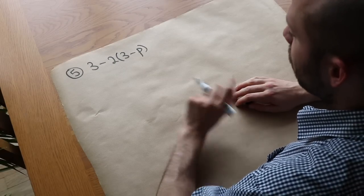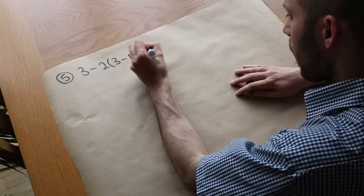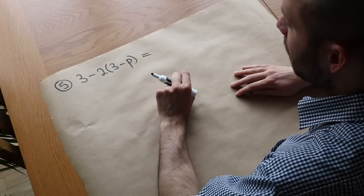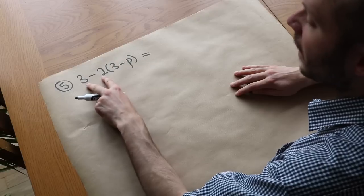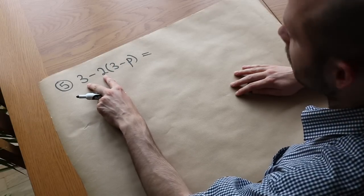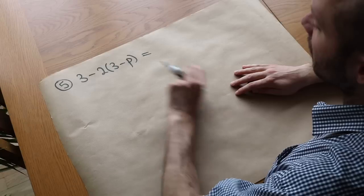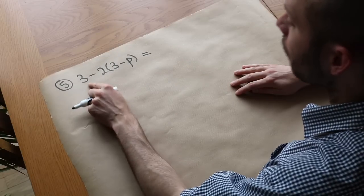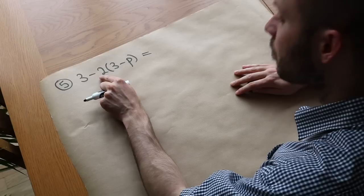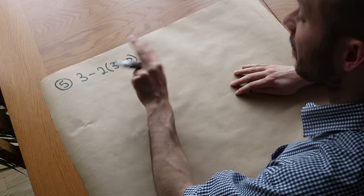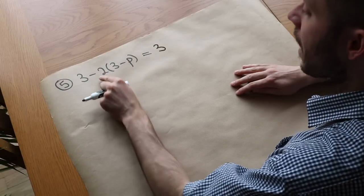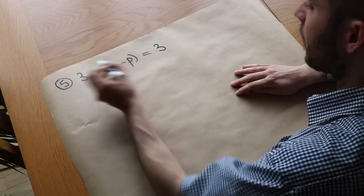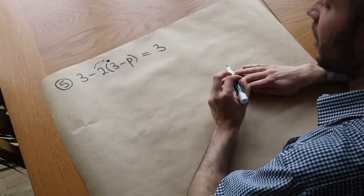I've got one last example here, which students typically get wrong. Now, the mistake that students frequently make is they imagine there's some kind of bracket around the 3 minus 2. So they simplify 3 minus 2 first, just get 1, and then they do 1 times 3 minus p. But that's not right. The 3 is separately here, and then we're subtracting 2 lots of 3 minus p separately. So we'll leave the 3, because it's on its own, and then we're subtracting 2 lots of 3 minus p.